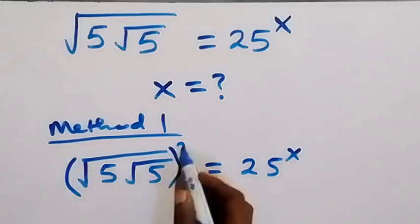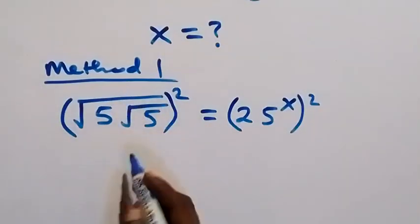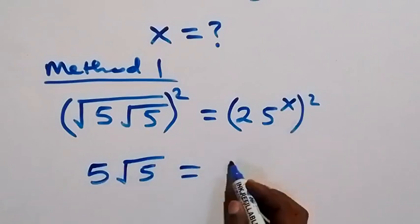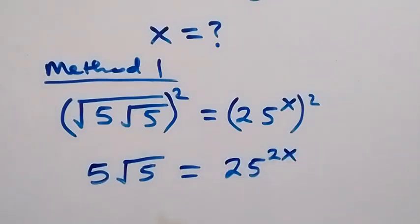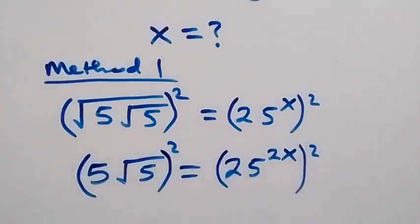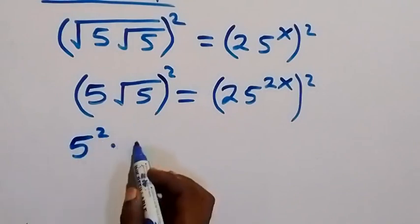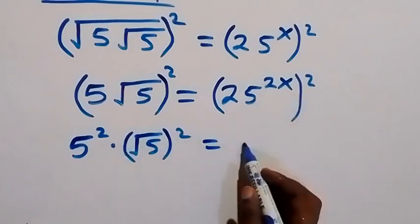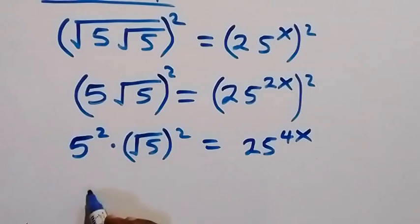Take the square on both sides — we square this side and this side too. This square cancels the square root, giving us five, then root five, which equals 25 raised to power 2x. We can repeat the process: square this side and this side as well. We affect these two numbers: five squared multiplied by root five squared, which equals 25 raised to power 4x.